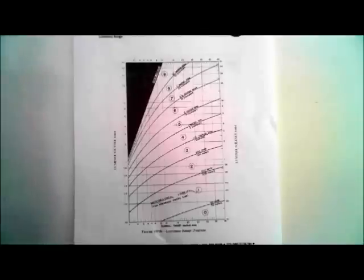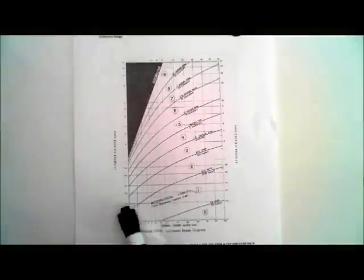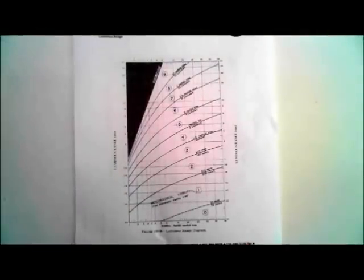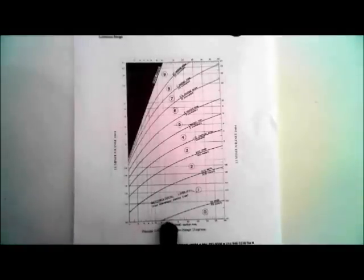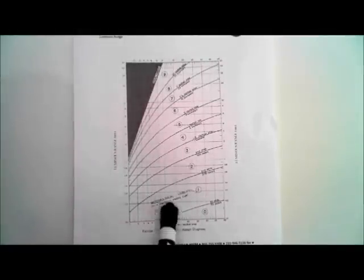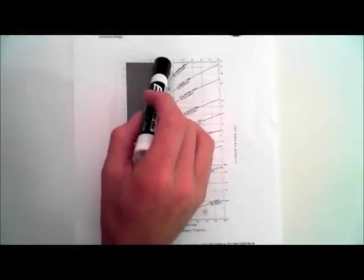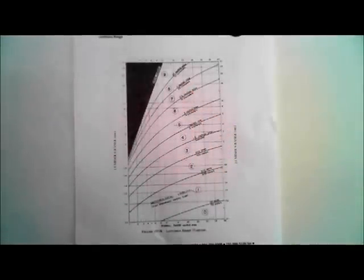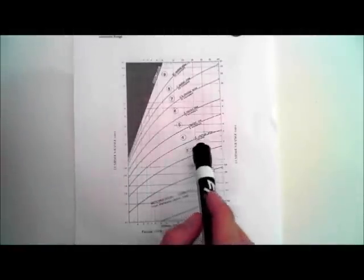Given the nominal range and the visibility, we can calculate the luminous range. The nominal range given was 12 nautical miles. There are dash lines along the bottom, so we find 10, 11, 12 — and you can connect that all the way to the top. Find 12 on the top, 12 on the bottom, connect those two, and see where they intersect the visibility curve of 0.5 nautical miles.